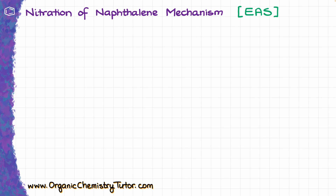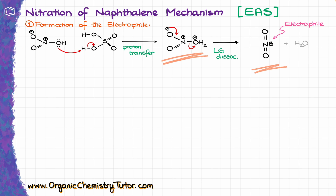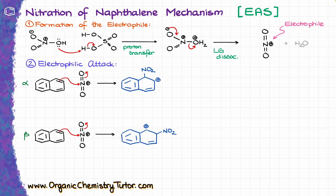Nitration is a typical electrophilic aromatic substitution reaction, and the first step is always the formation of the electrophile. In this case, we make our NO2+ electrophile by first protonating the nitric acid with sulfuric acid, which is a stronger acid, giving us a positively charged intermediate. Then, upon leaving group dissociation, the water pops off and gives us our electrophile, NO2+. Once we have the electrophile in the system, it can attack the aromatic ring, making a corresponding resonance-stabilized carbocation.